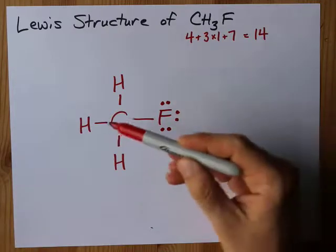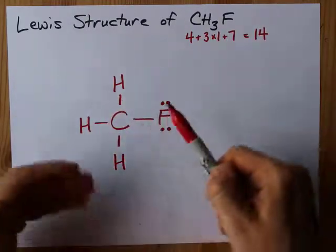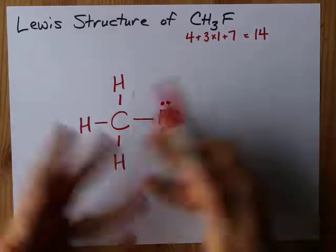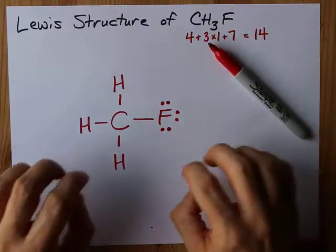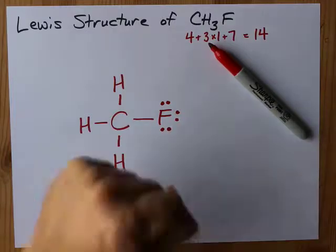Carbon's octet rule is also satisfied because it has two, four, six, eight electrons in these bonds. That's it, we're done. Super easy, I hope you found it that way. Best of luck in whatever you're drawing next. Peace.